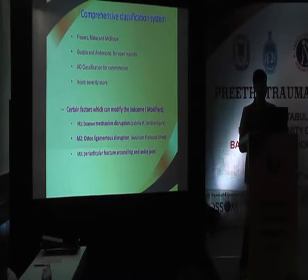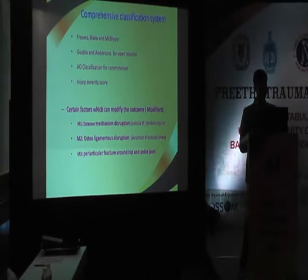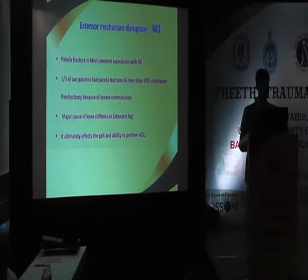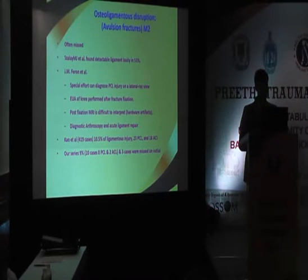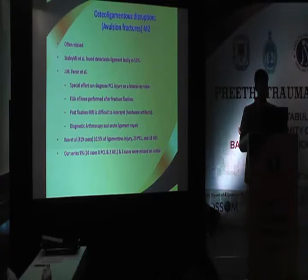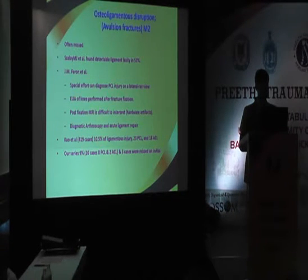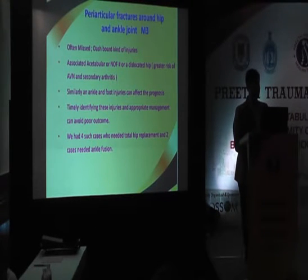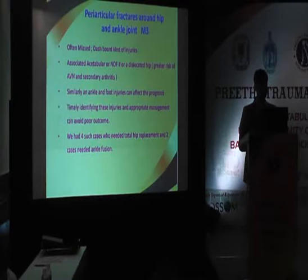We also added certain modifiers: M1 for extensor mechanism disruption, M2 for osteoligamentous disruption, and M3 for peri-articular fractures around the hip and ankle. We know patella is the most common association in one-third of cases and in the majority they need patellectomy. Ligamentous injuries are associated in more than 50% of cases; identifying avulsion is not difficult on the lateral X-ray. J.M. Ferron has shown that evaluation after fixation is equally important, and missing hip and ankle injury is very common because focus remains only on the knee — one has to look for these injuries.